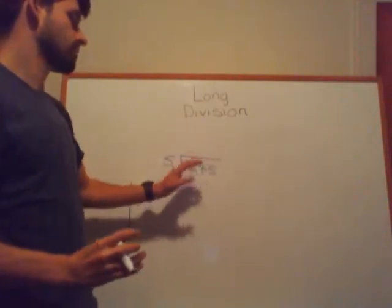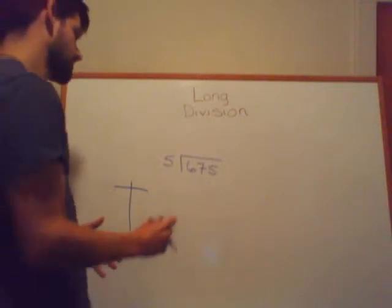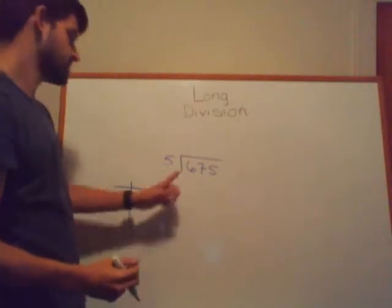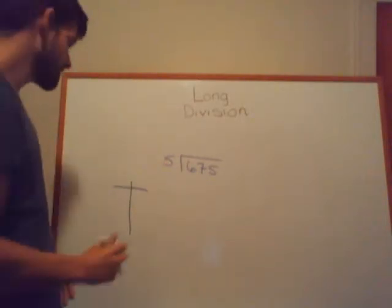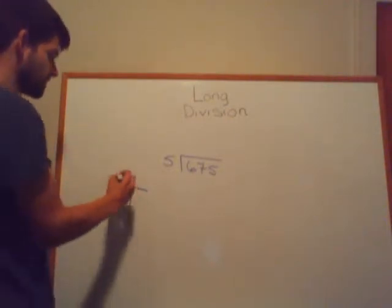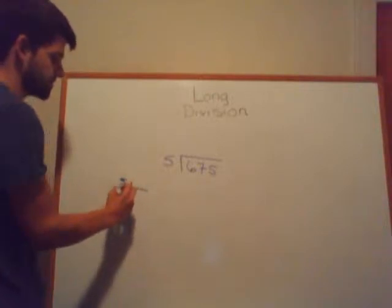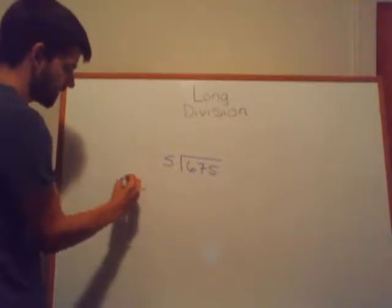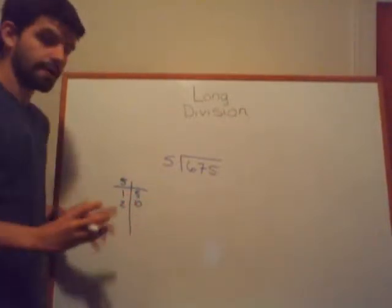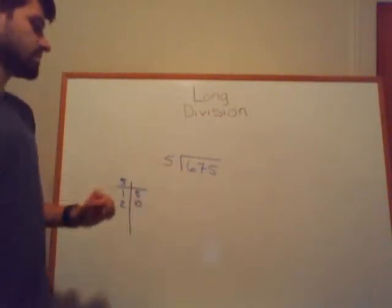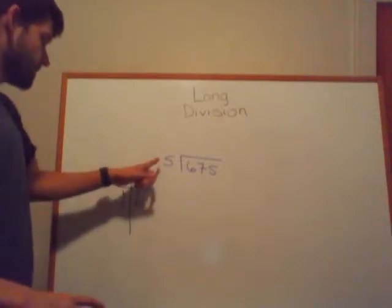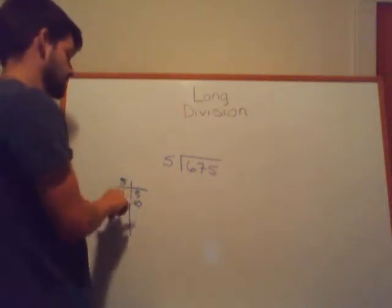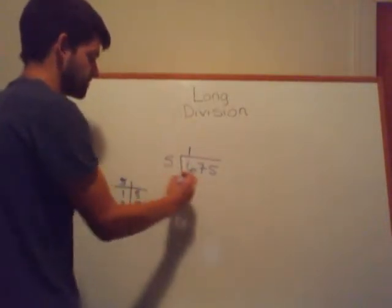Instead of trying to tackle the whole number at once, let's break it apart and take it step by step. How many times does 5 go into 6? If you're ever unsure, write your times tables for your divisor. For divisor 5: 5×1=5, 5×2=10. I can stop here because I'm trying to figure out how many times 5 goes into 6 without going over. 5 can't go into 6 twice because 10 is greater than 6, but 5 can go into 6 one time because 5×1=5.